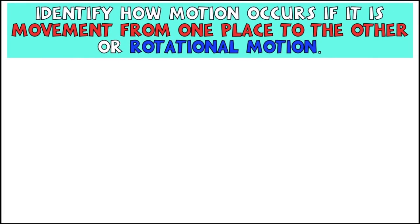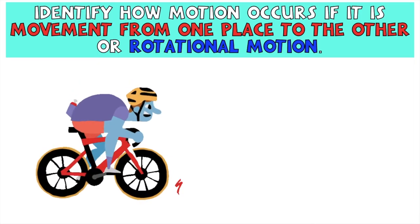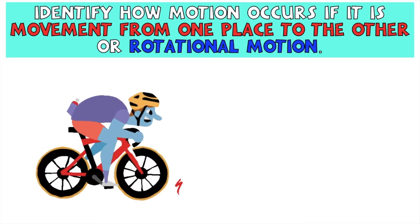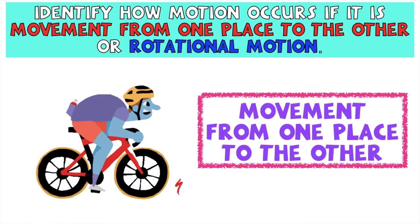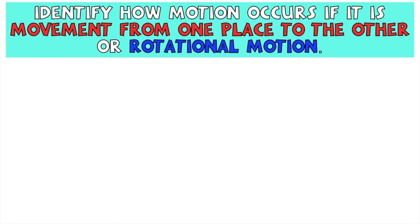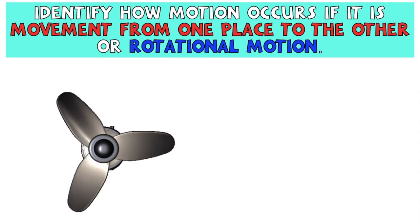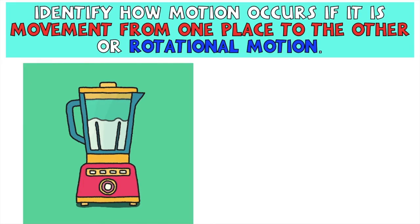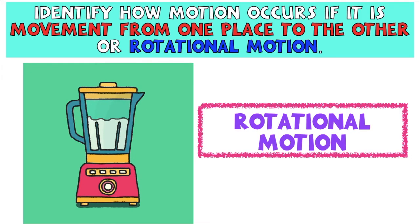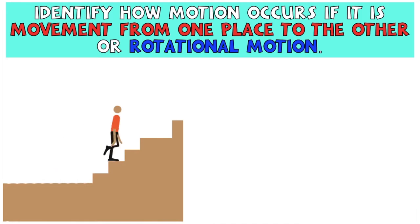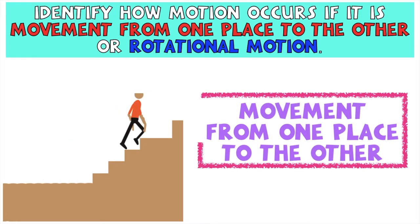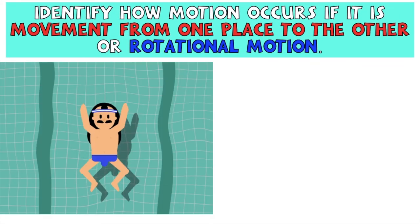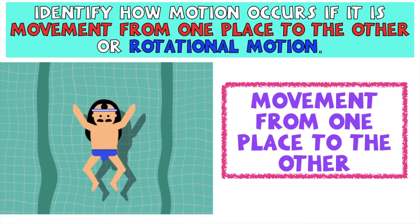Are you ready? Is it movement from one place to the other, or rotational motion? That's correct, children — the answer is movement from one place to the other. How about this one? That's correct — the answer is rotational motion. How about this? Very good, the answer is rotational motion. How about this? Great job, children — this is movement from one place to the other. How about this one? Movement from one place to the other.